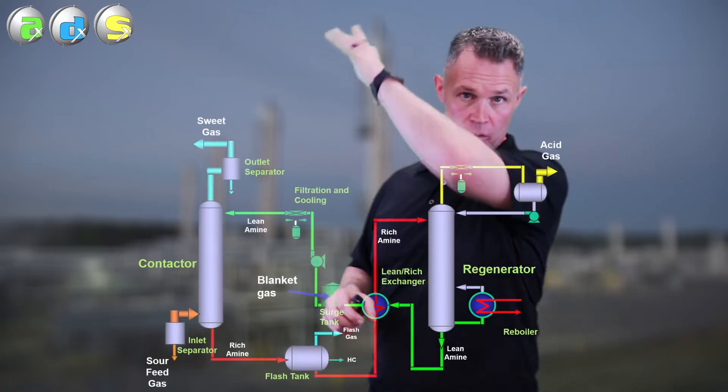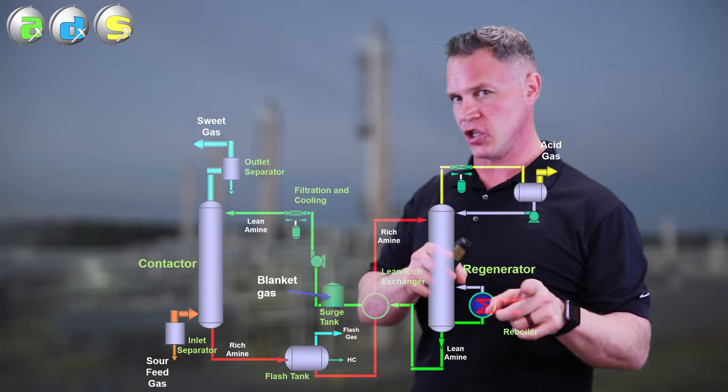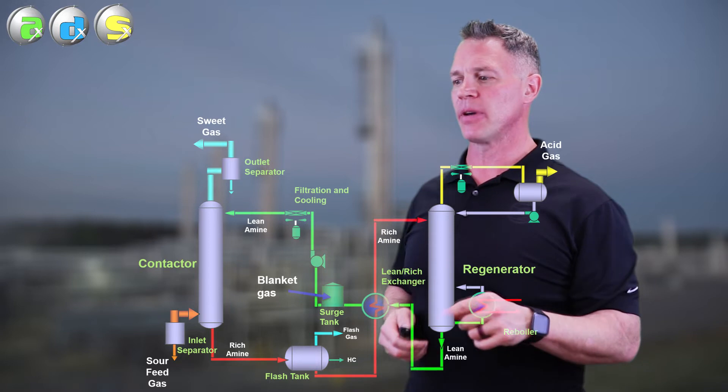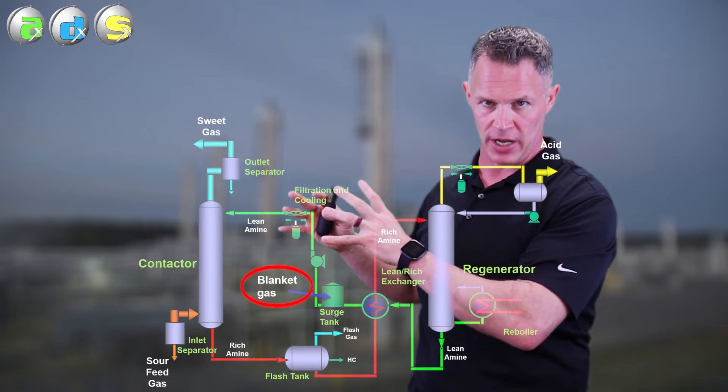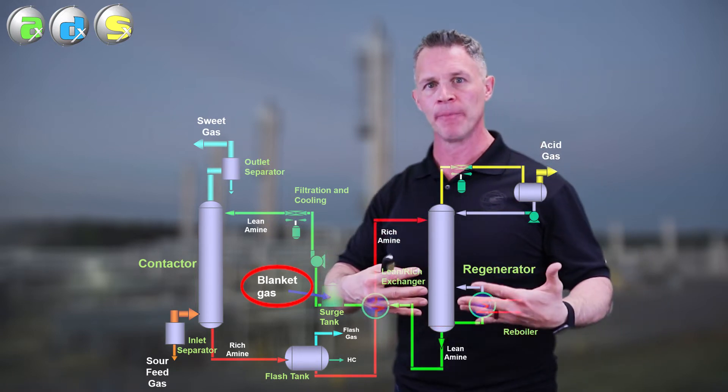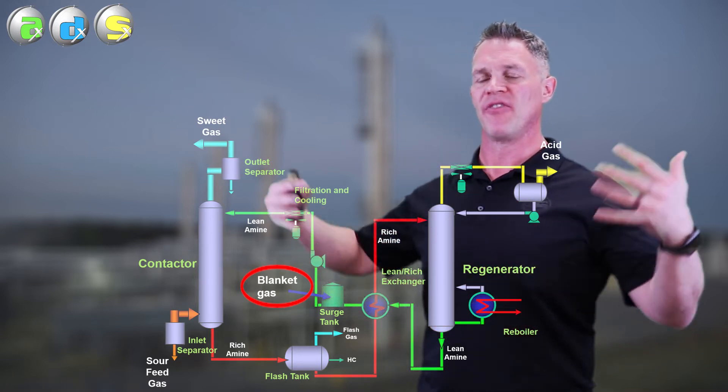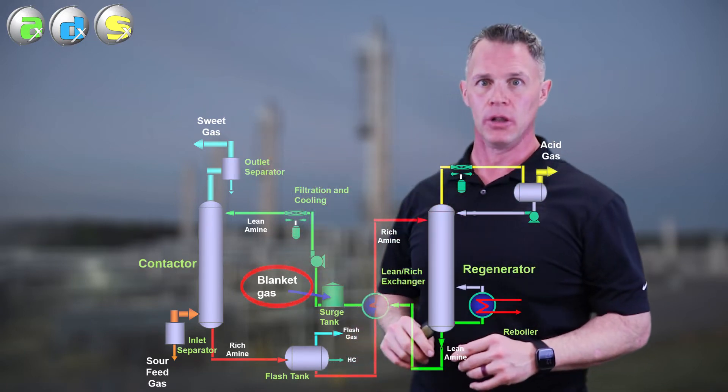Oxygen normally comes from two sources. Either it's entering with your feed gas and going right into your amine absorber, or if you have a surge tank, it can be coming in from there as well. It's why we keep blanket gas on our surge tanks, usually nitrogen or fuel gas, some type of inert gas that will prevent air from getting into the surge tank when the amine level lowers.